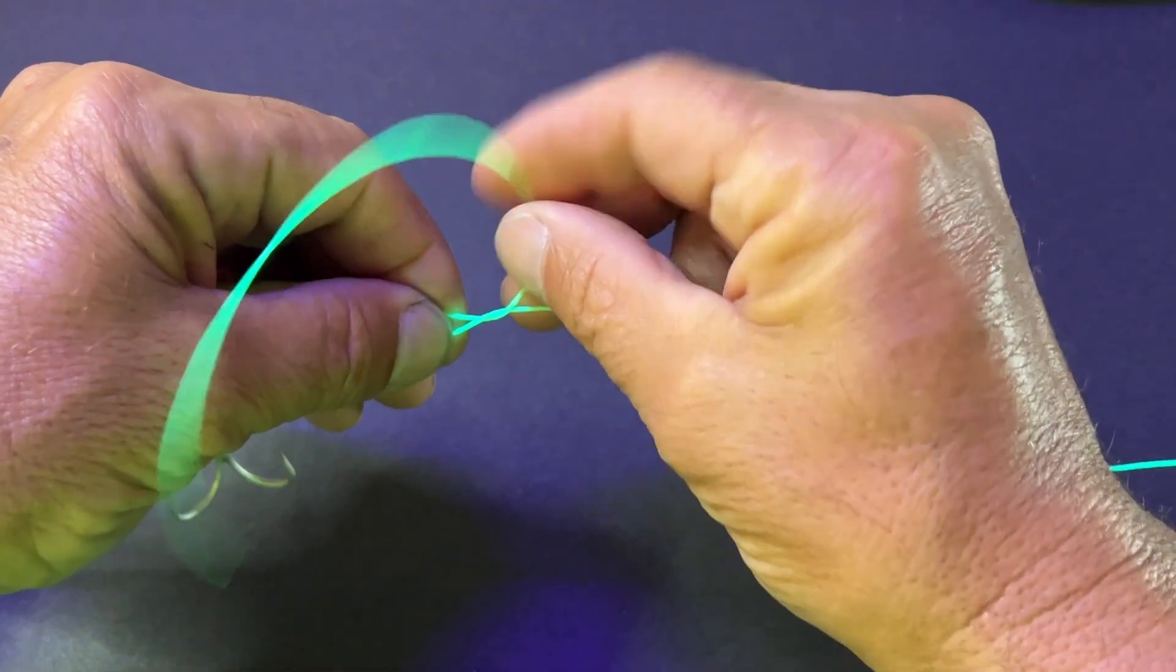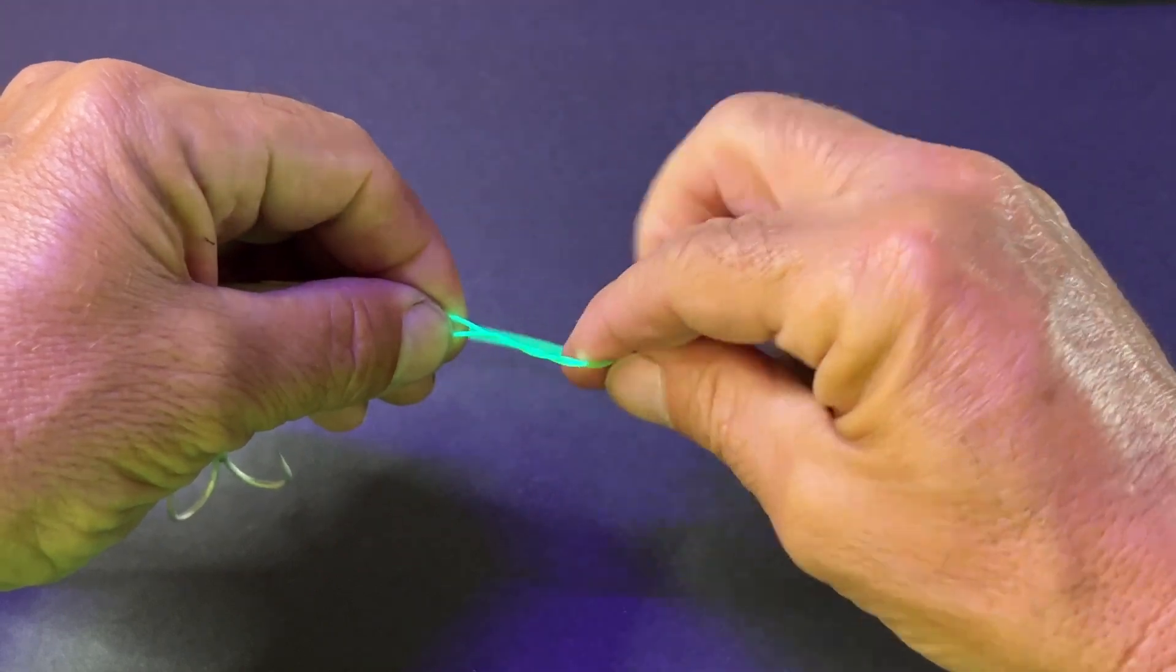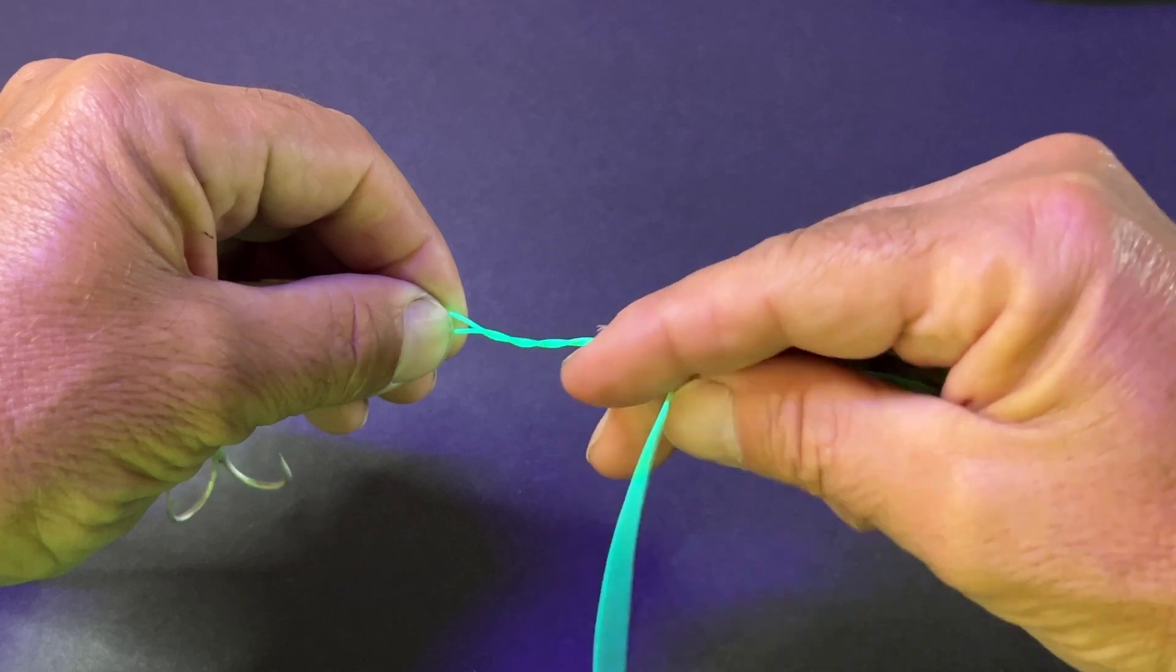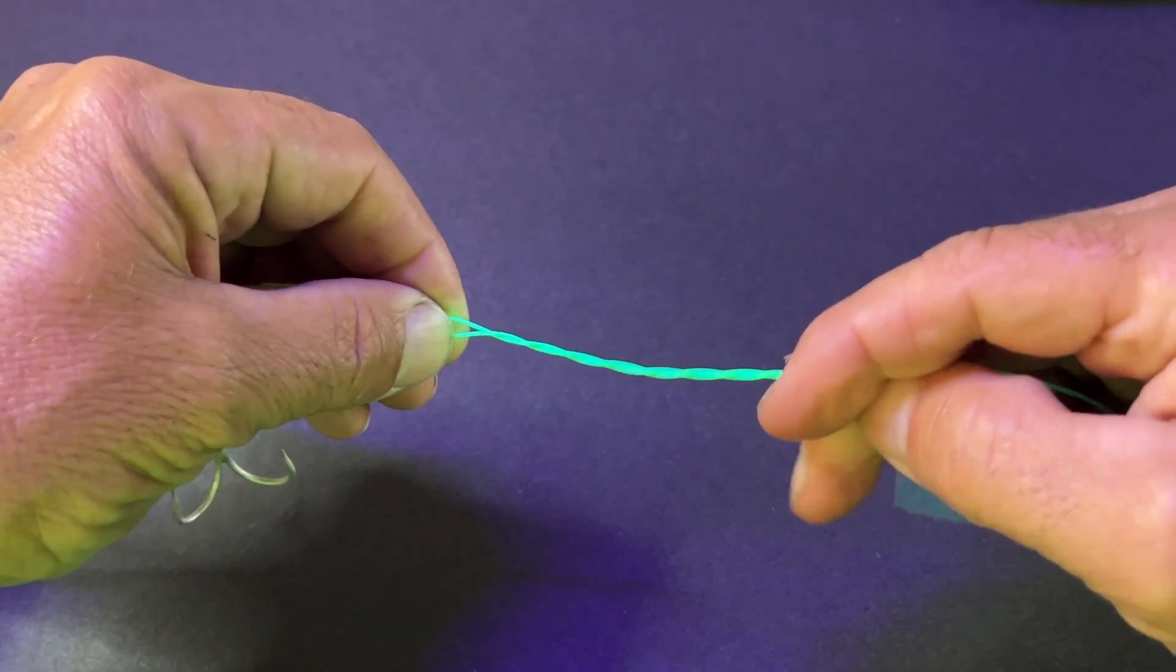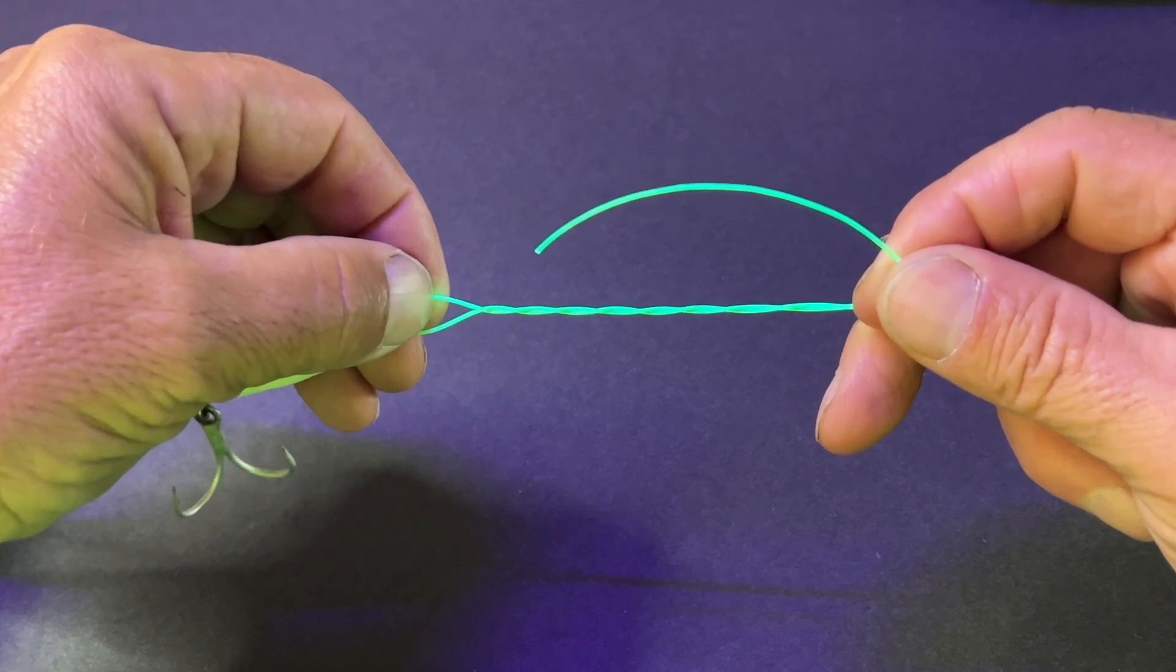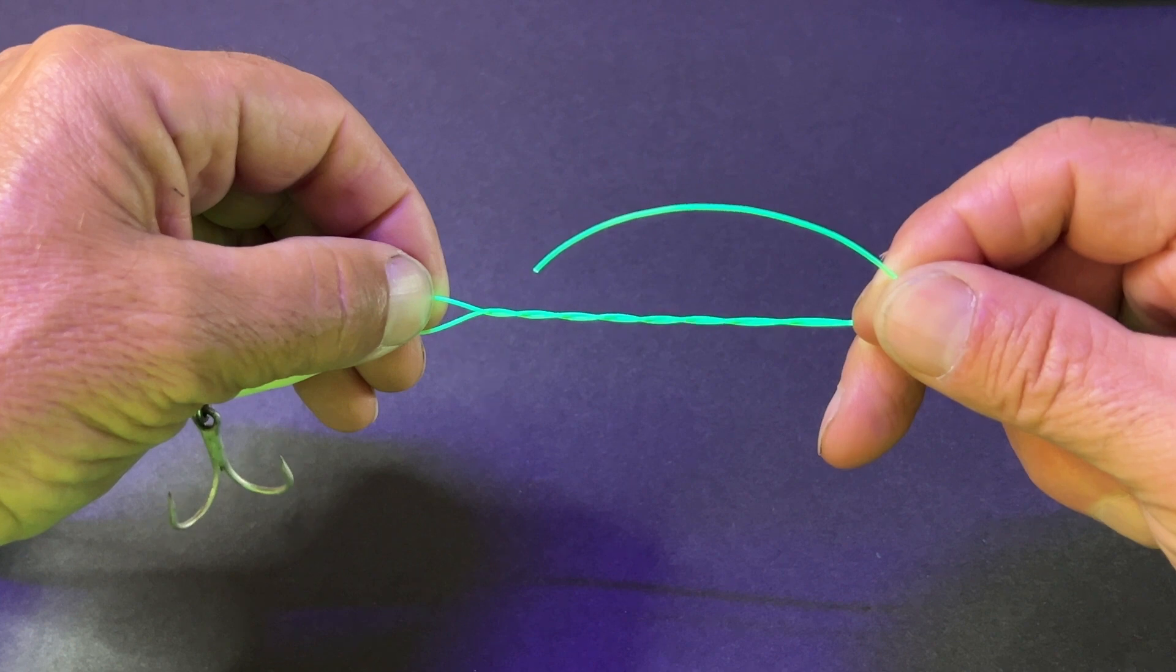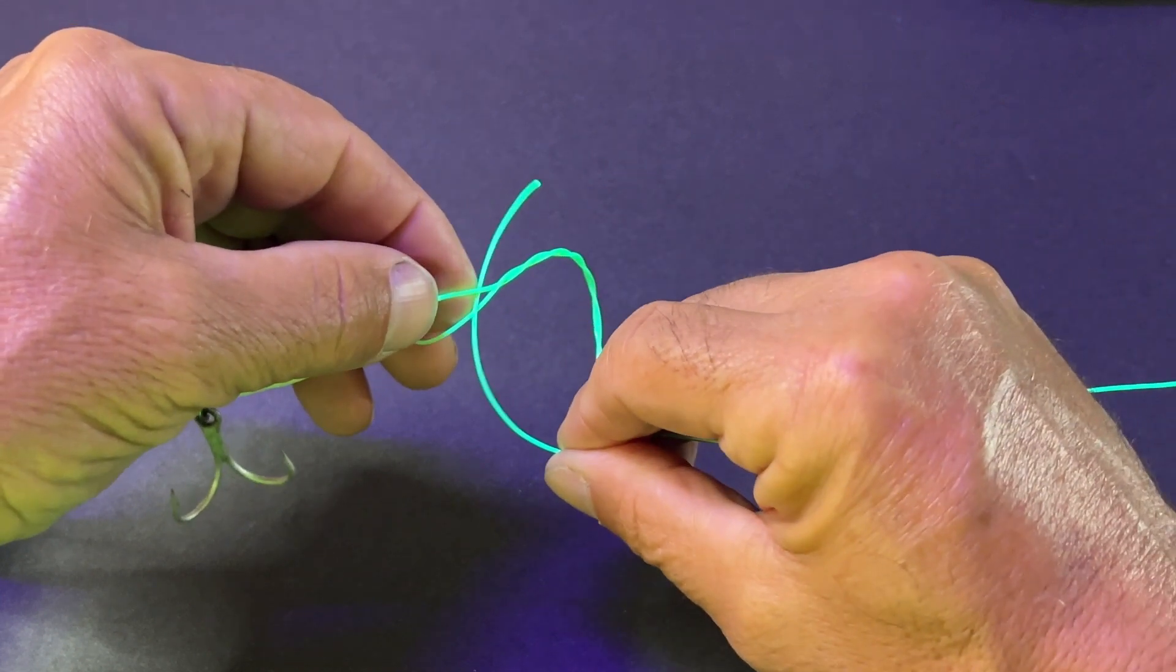One, two, three, four, five. Now I'm going to put the tagline through that loop there, and you can see I have a nice loop the way I started that knot. So that tagline goes right through.